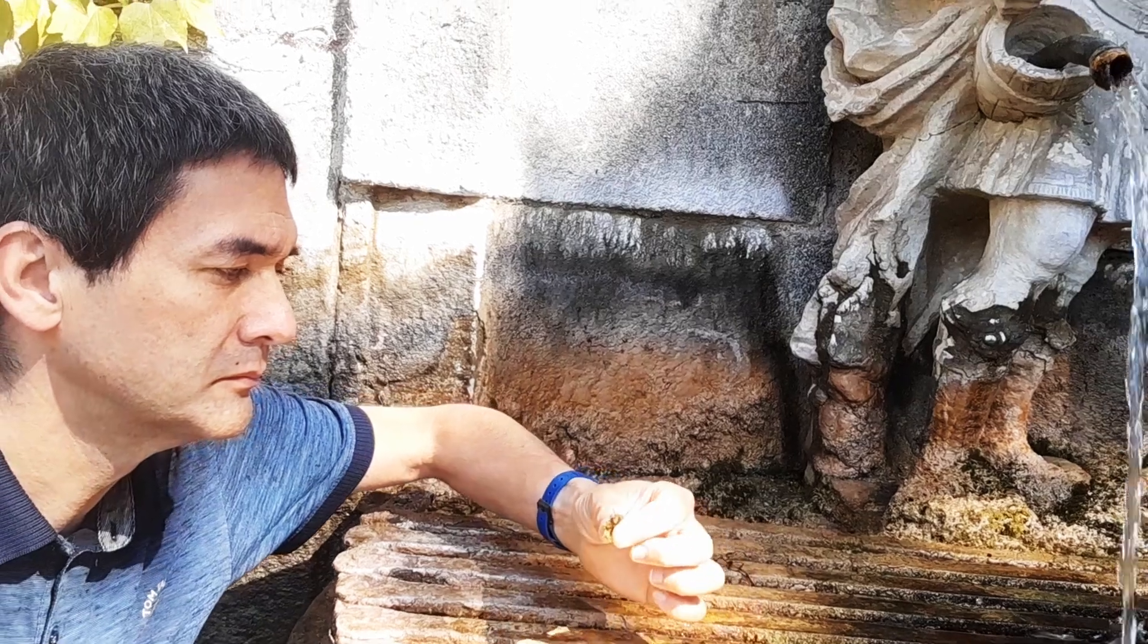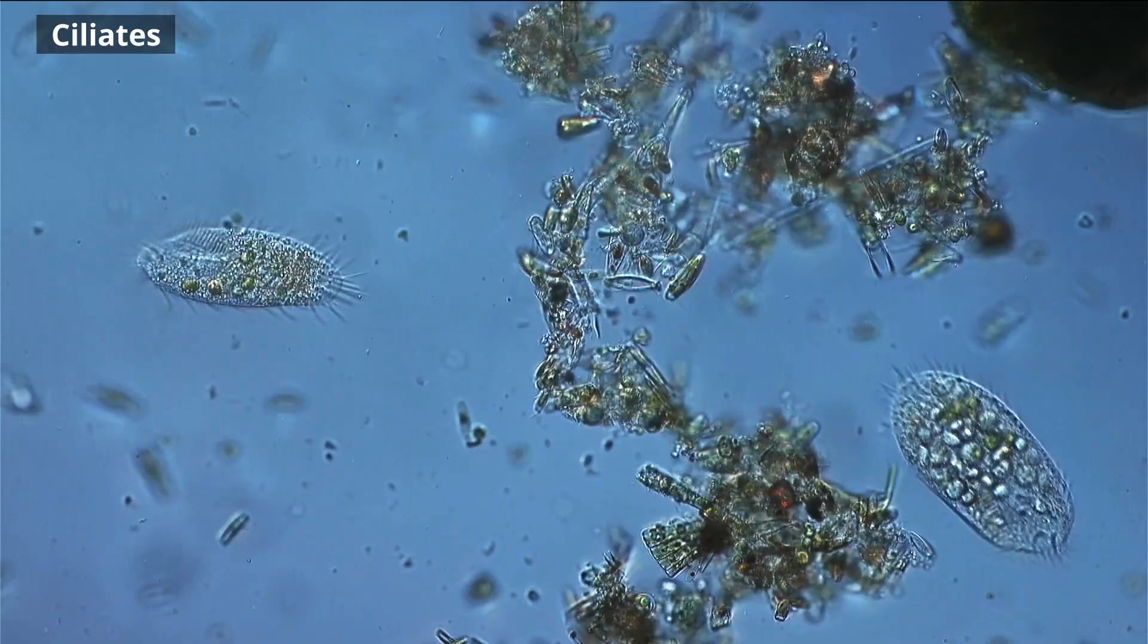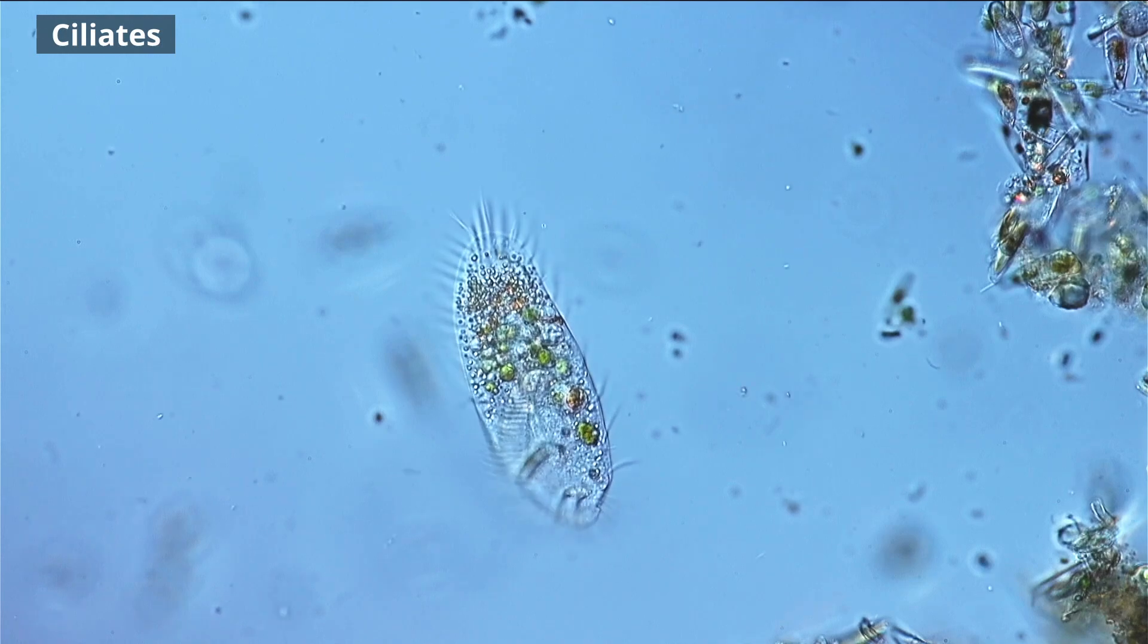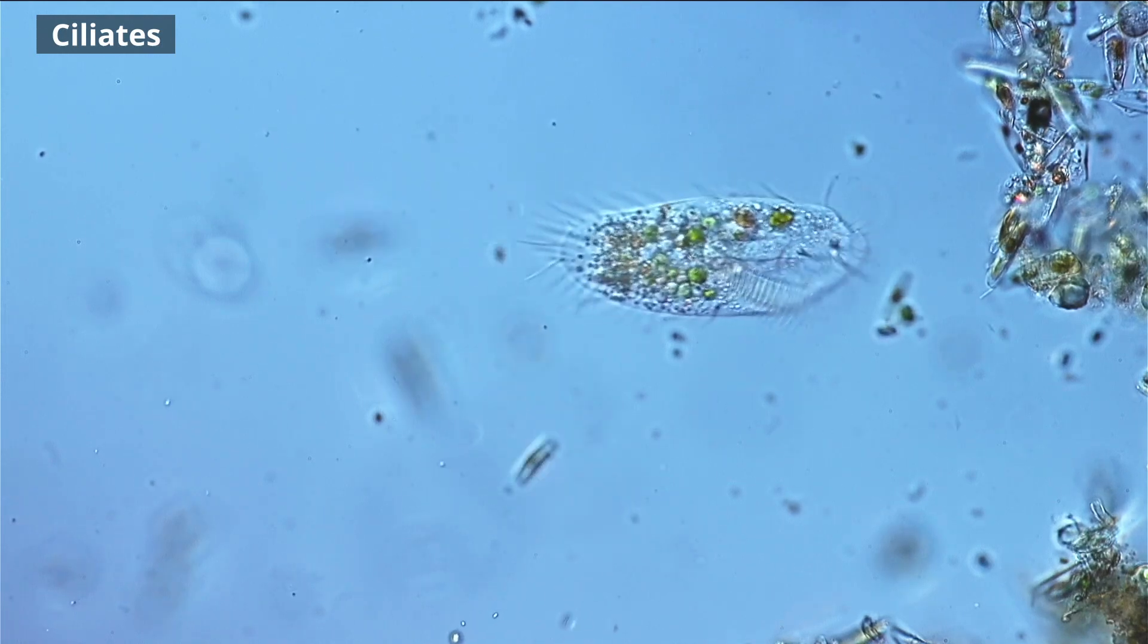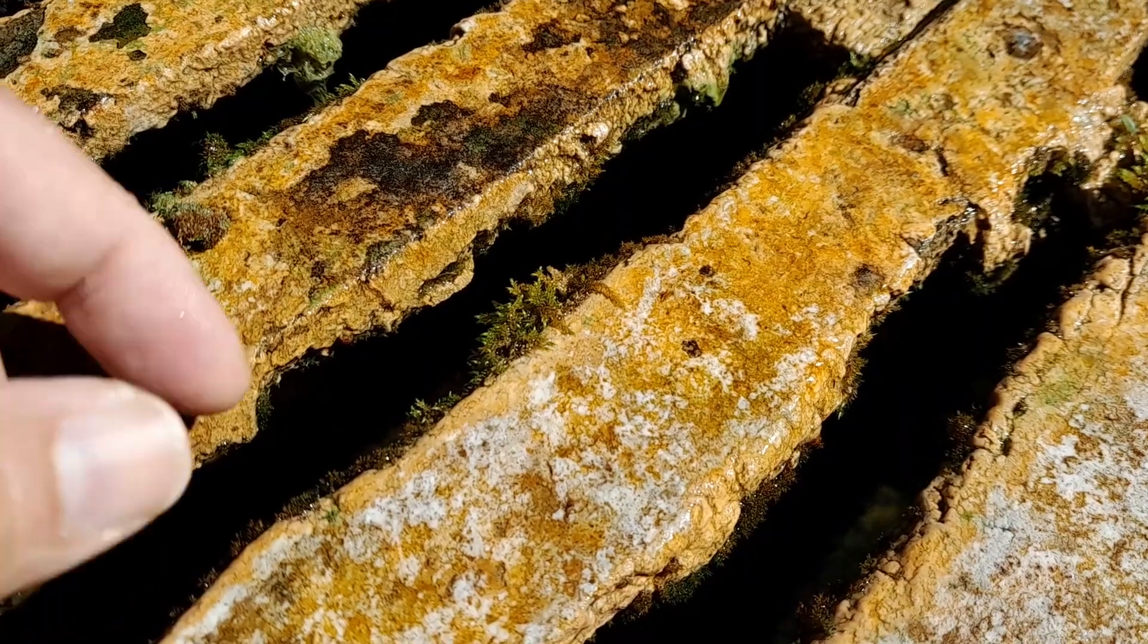So why do microbes not care about borders? I recently visited my local fountain to find out what kind of microorganisms live in it, and when I looked at the water under the microscope, I discovered that many of the organisms found there are also common in ponds and streams. This raised the interesting question: how did they get there in the first place? In other words, how do microscopic organisms manage to spread between different environments?